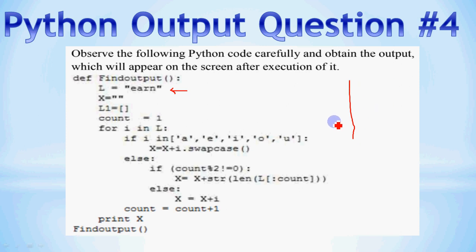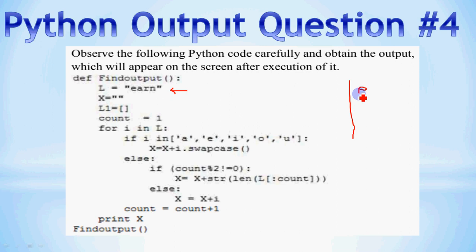Now, for I in L — this is a for loop. Everything that is indented comes under this for loop, meaning it will repeat. How many times? It will repeat for each character in L. The first character is E, then A, then R, then N. So the first time I value is E, then A, then R, then N.